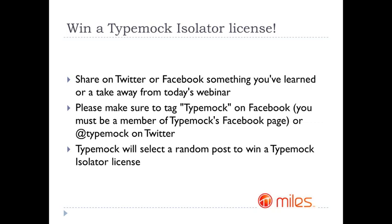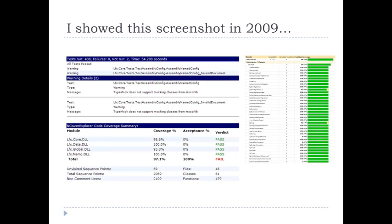Before we delve into executable specifications, I want to show a screenshot I took in 2009 — a test code coverage report from some of my projects. It says test code coverage is about 100%. For two libraries it's exactly 100%, made possible because I used TypeMock Isolator. For the rest of the project it's 95%, which is pretty impressive. I was very proud of that.